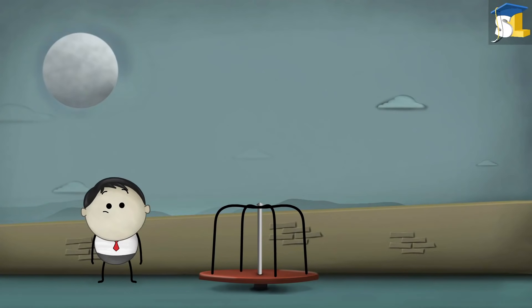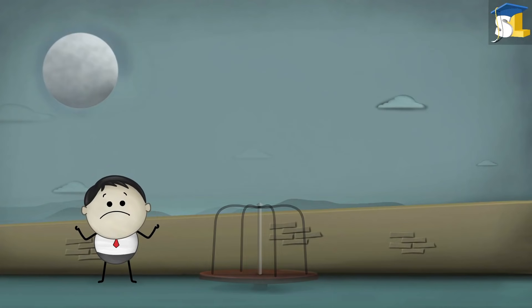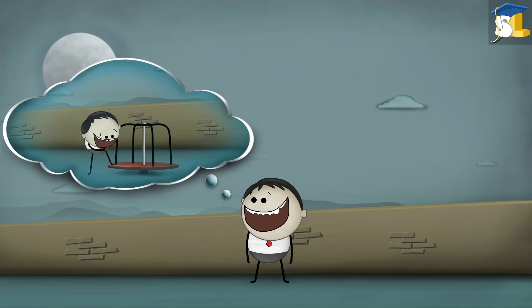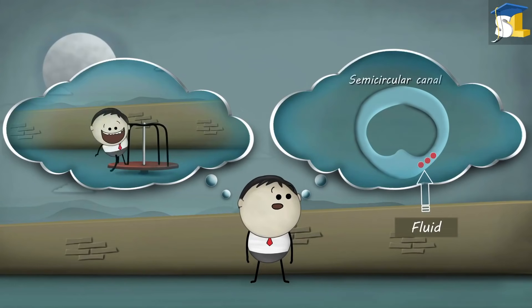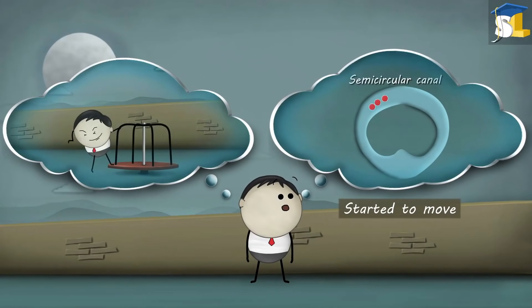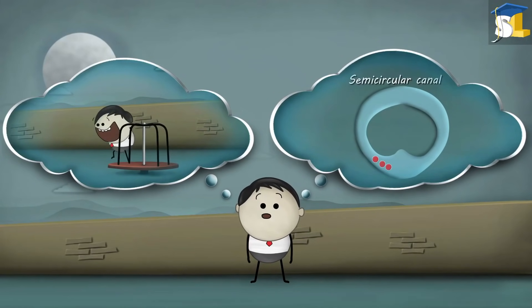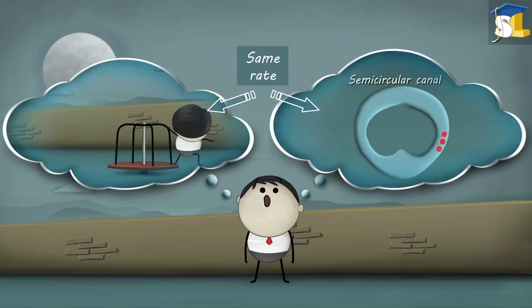Hey. Why were you not able to maintain your balance? This is because when you sat in the merry-go-round and started rotating, the fluid in the semicircular canals also started to move. After a while, it was moving at the same rate at which you were moving.